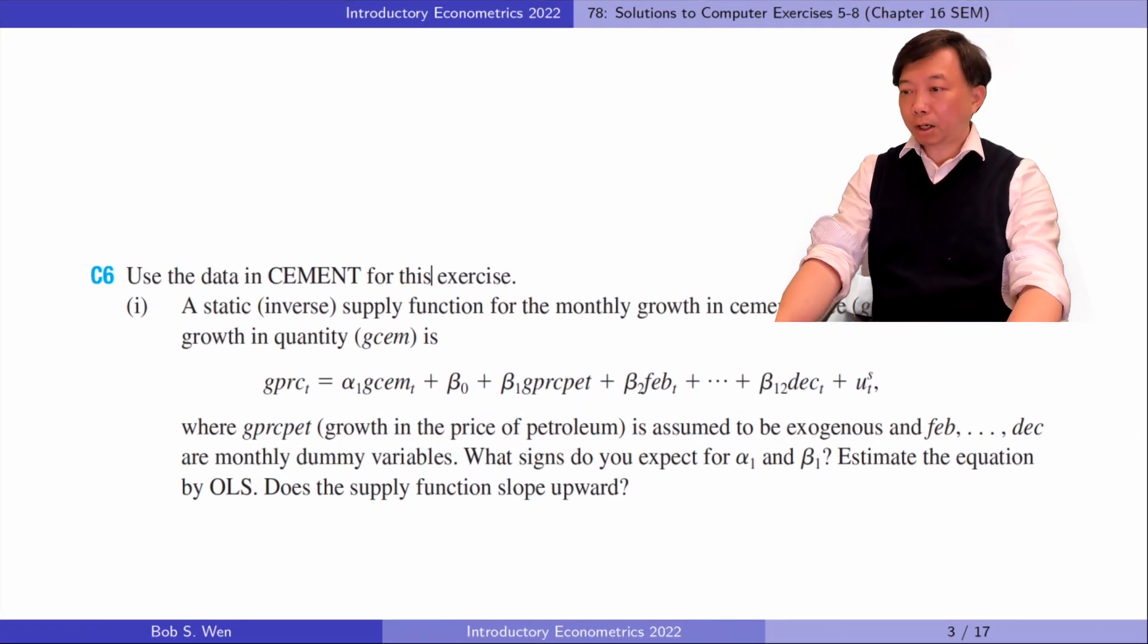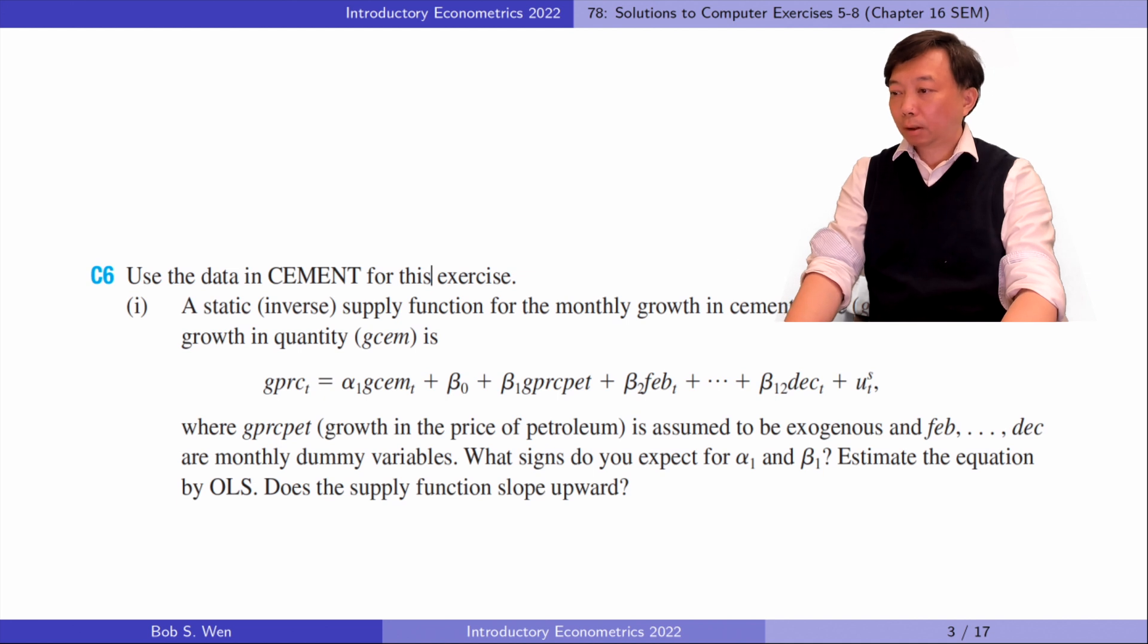Let's do Computer Exercise 6. In part 1, a static inverse supply function for the monthly growth in cement price as a function of growth in quantity is as follows, where growth in the price of petroleum is assumed to be exogenous, and monthly dummy variables are in the model. What signs do you expect for alpha 1 and beta 1? Estimate the equation by OLS. Does the supply function slope upward?